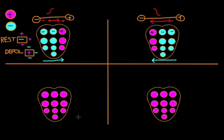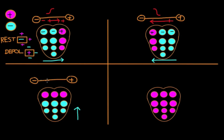What happens when the wave of depolarization occurs in a perpendicular direction to the lead? We still have the negative and positive probes in the same orientation as before, but the wave of depolarization is perpendicular to the lead. We still have a dipole, but this time the dipole is perpendicular to the orientation of the two probes. On the EKG machine, this is shown as a neutral wave or no wave.